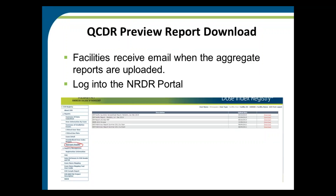All reports can be downloaded by logging into the NRDR portal. We email you when aggregate reports are uploaded, then you log in with your username and password. Under the reports section, select the aggregate report option to see a list of available reports and click download. All facility users should be able to access the reports.